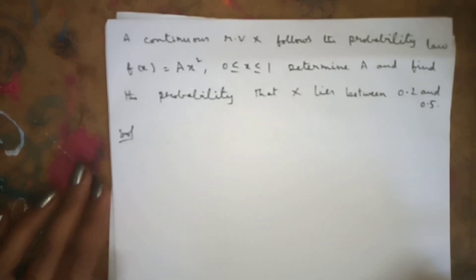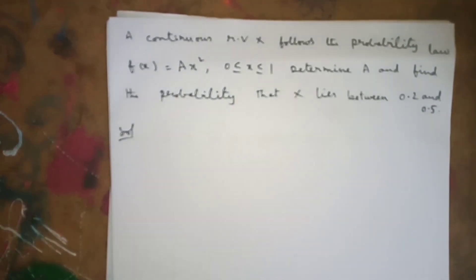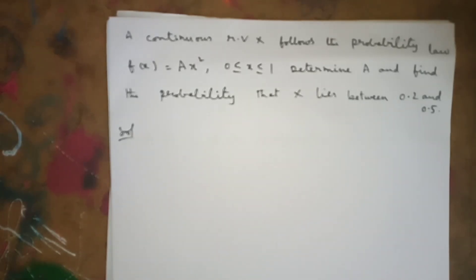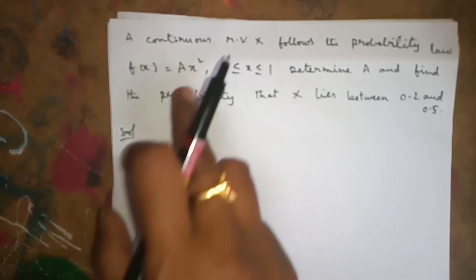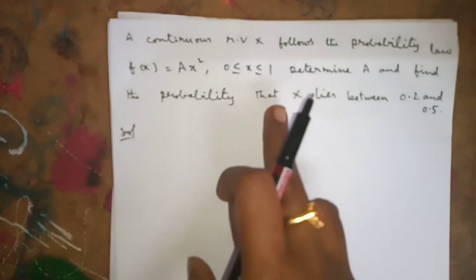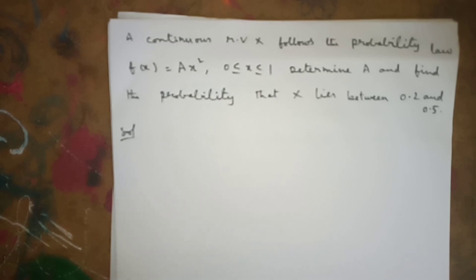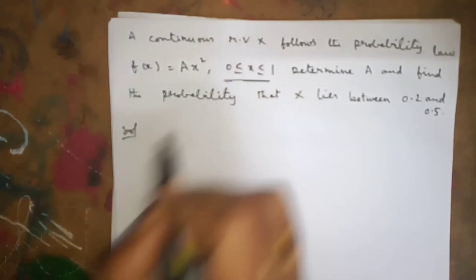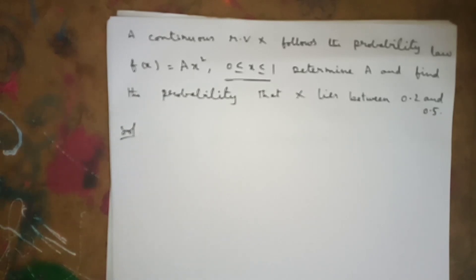Hello everyone. Now I'll explain PDF problems under continuous random variables. The first problem: a continuous random variable x follows the probability law f(x) = ax², for 0 ≤ x ≤ 1. We need to determine 'a' and find the probability that x lies between 0.2 and 0.5. If x lies between certain limits, it is a continuous random variable.